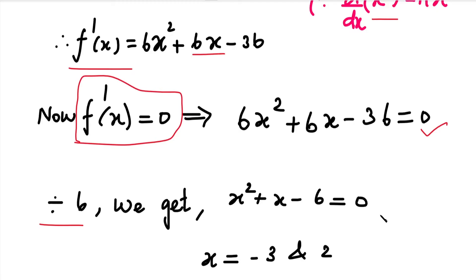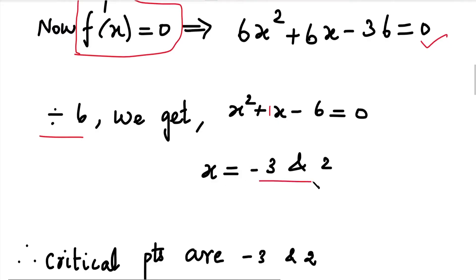This is a second degree equation, so if we solve it we get two values of x. We can use the quadratic formula x equal to minus b plus or minus root of b square minus 4ac divided by 2a. An easy method is to use a calculator — the link is in the description. Using the calculator, we get x equal to minus 3 and x equal to 2. So these two are the critical numbers.